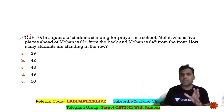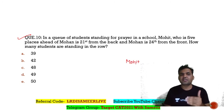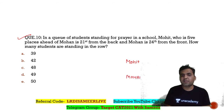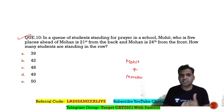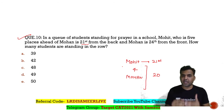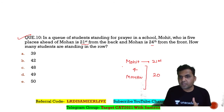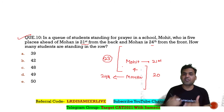Question number 10: In a queue of 1000 students standing for prayers in school, Mohit is five places ahead of Mohan — meaning there are exactly four people standing between them. Mohit is 21st from the back, so 20 people are standing behind Mohit. Mohan is 24th from the front, so 23 people are standing in front of Mohan.